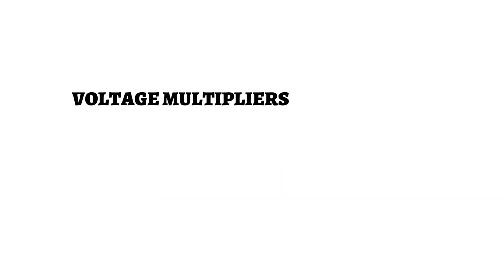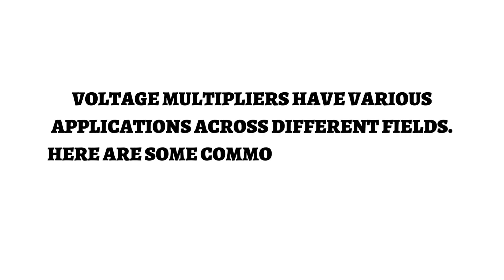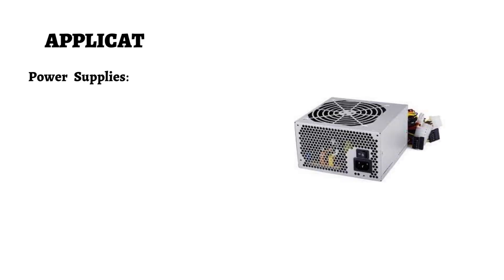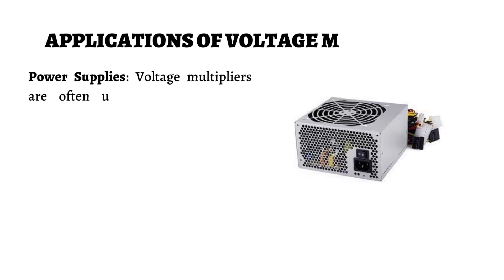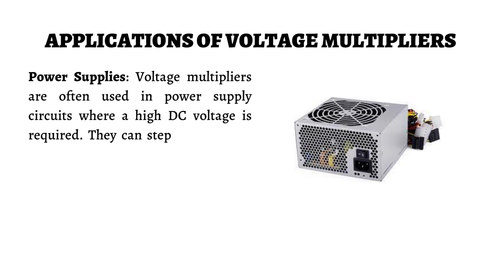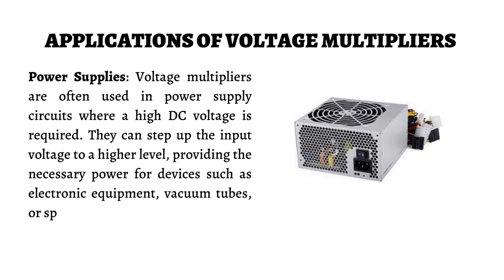Voltage multipliers have various applications across different fields. In power supply circuits, voltage multipliers are often used where a high DC voltage is required. They can step up the input voltage to a higher level, providing the necessary power for devices such as electronic equipment, vacuum tubes, or specialized components.